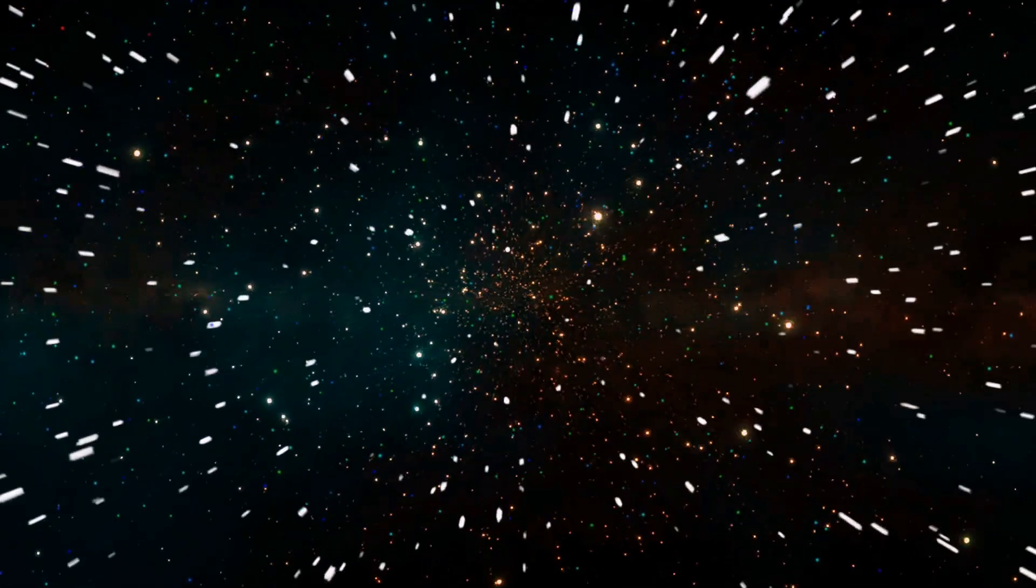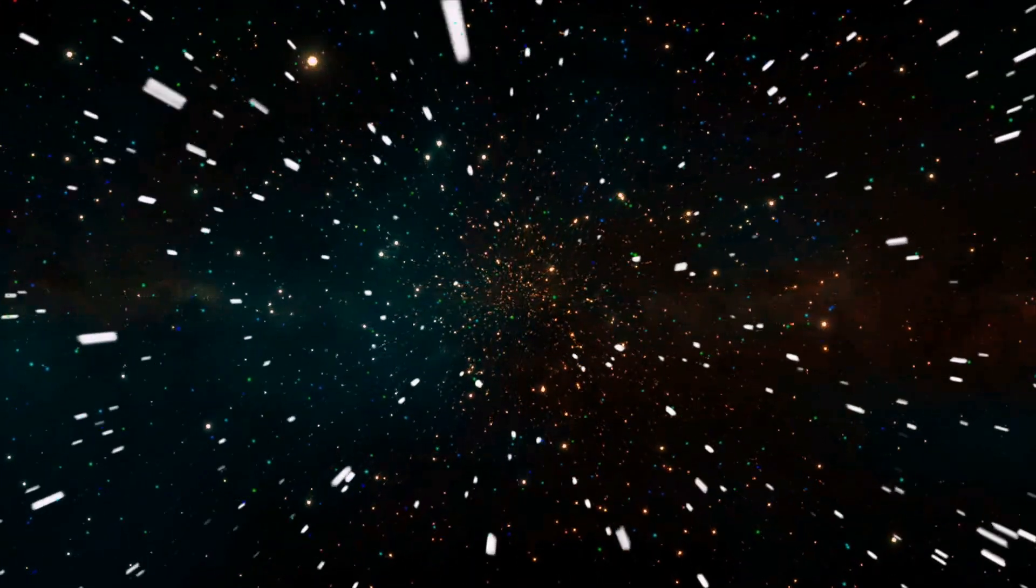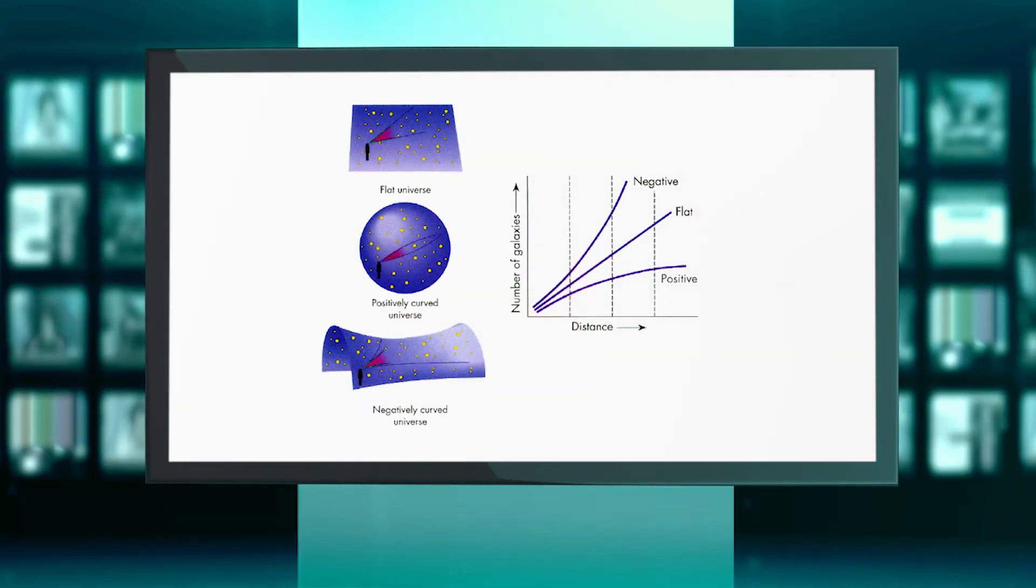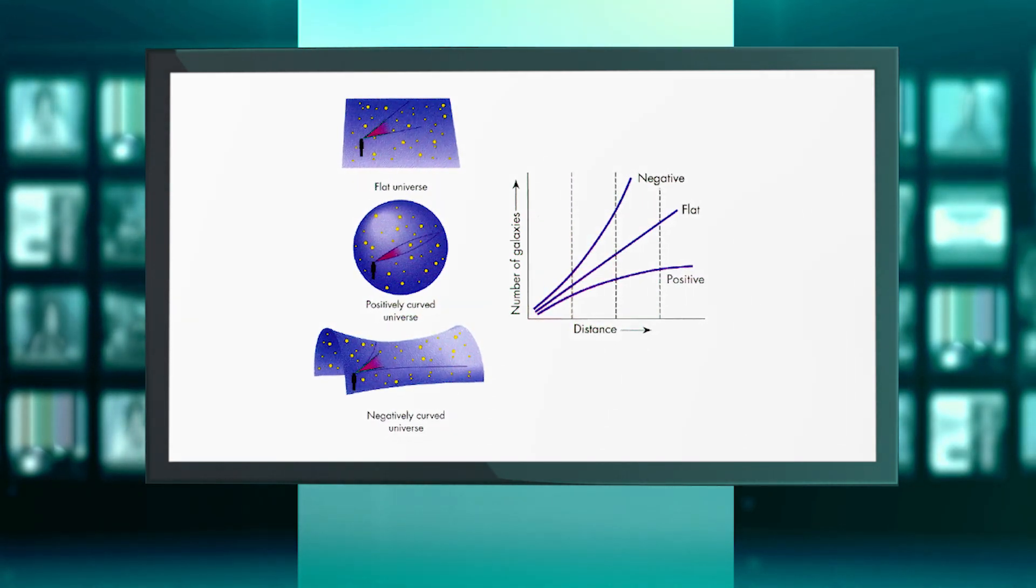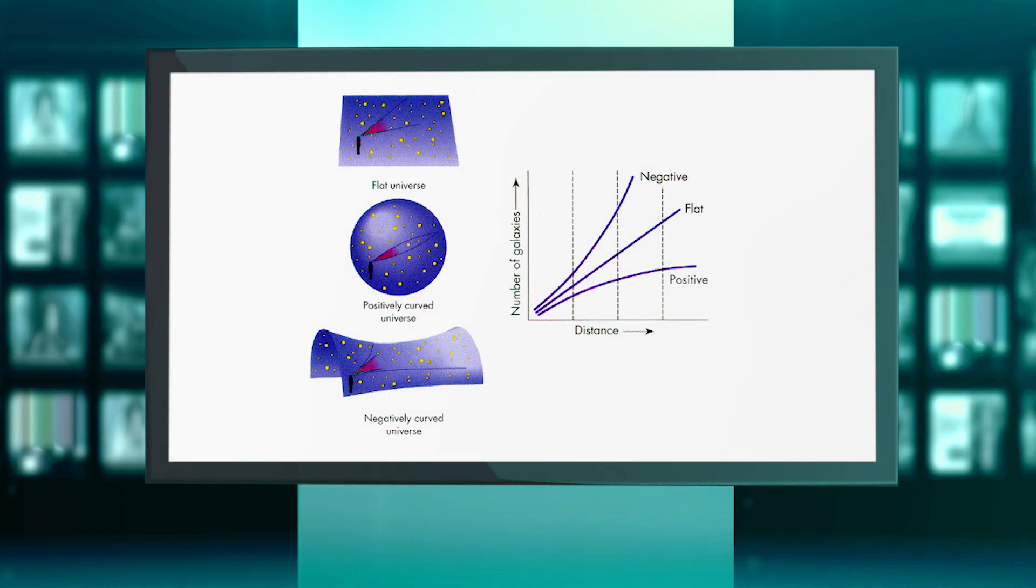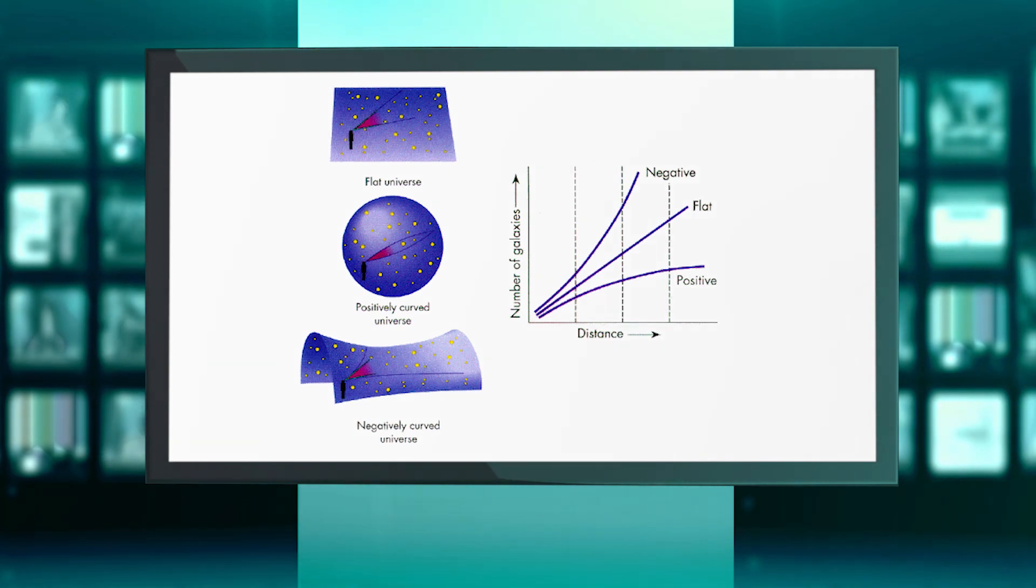The word unstable means that any deviation from the equilibrium point in either direction will rapidly grow. If the value of Omega in the early universe was just a little above 1, it would have rapidly risen towards infinity. If it was just a smidgen below 1, it would have rapidly fallen towards zero.